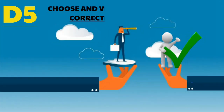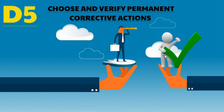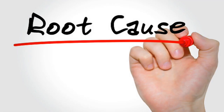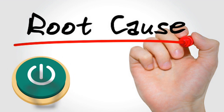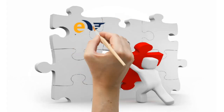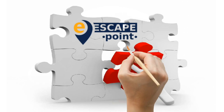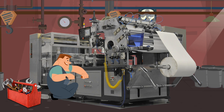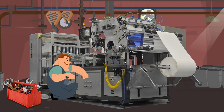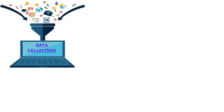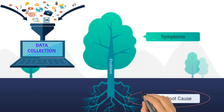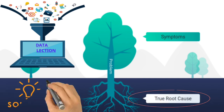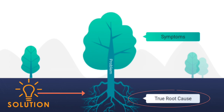The next step is D5 — choose and verify permanent corrective actions. A permanent corrective action to eliminate the root cause is initiated, and corrective action to close the escape point is also initiated. While solving one problem, care is taken to avoid creating another problem. Once data collection is properly done and root causes are identified, solution identification is relatively simpler.